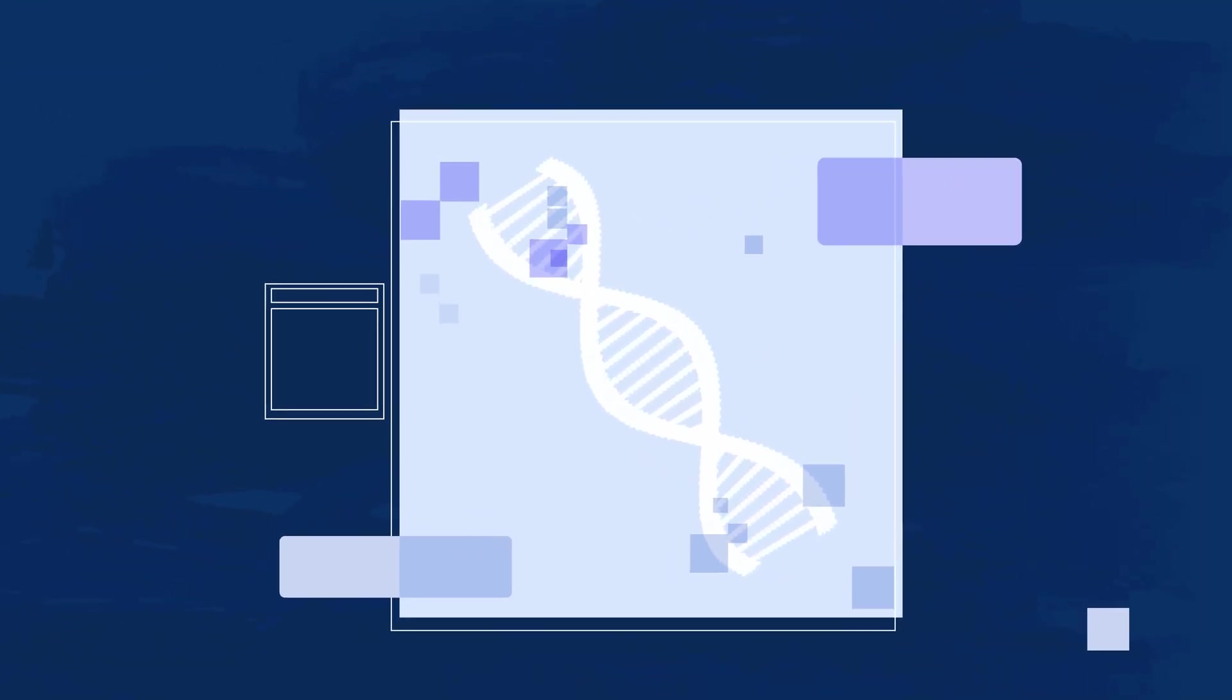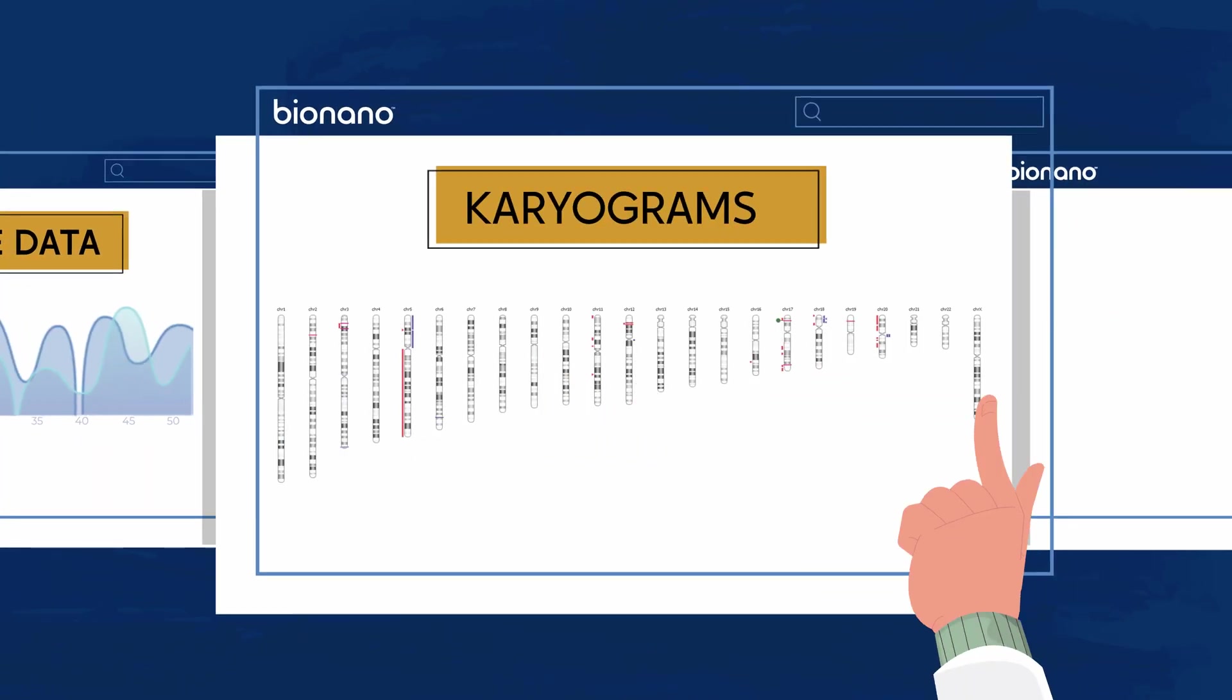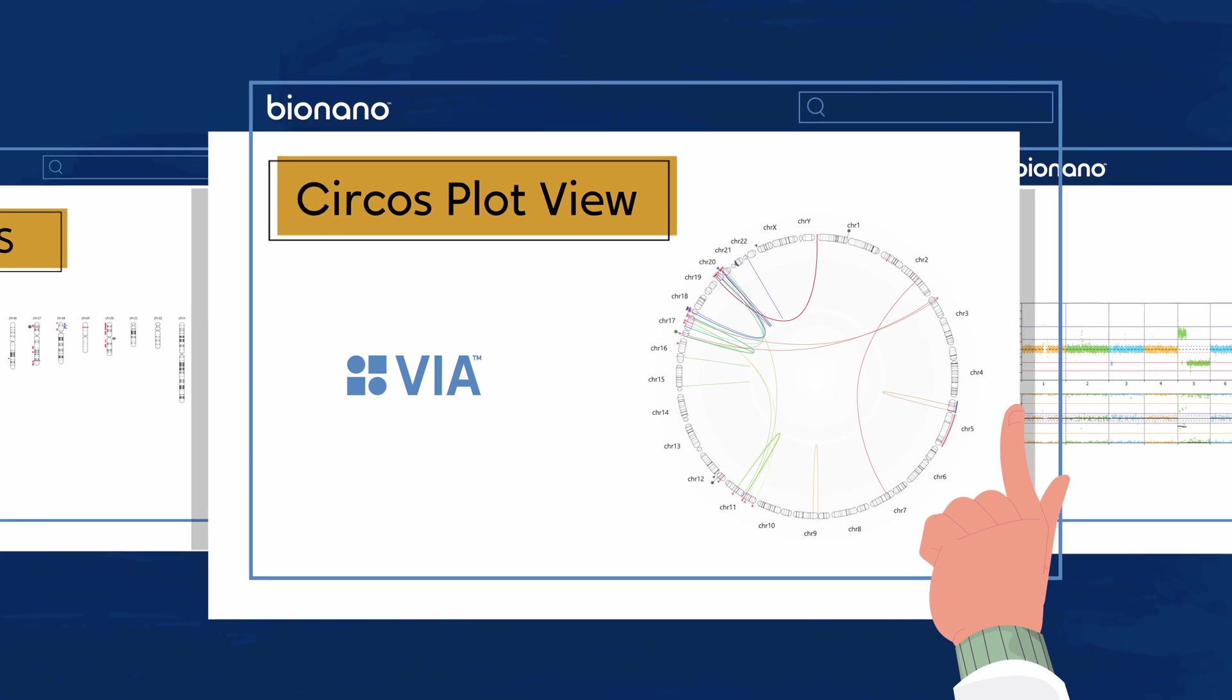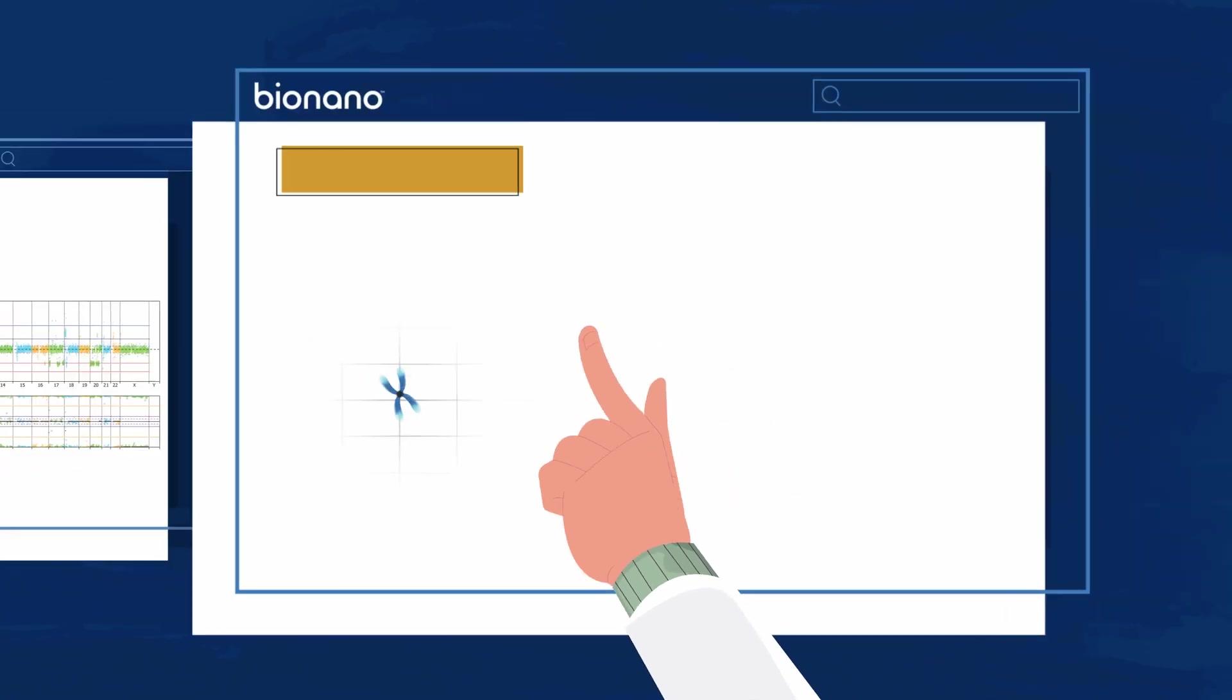VIA offers innovative and powerful ways to visualize genome variation data, including karyograms, circus plots, and multiple browsers that allow you to go from whole genome representation down to chromosome,